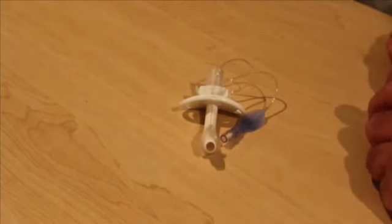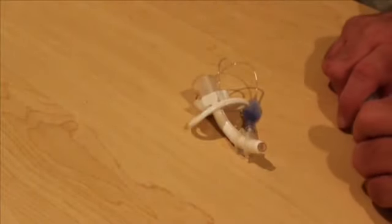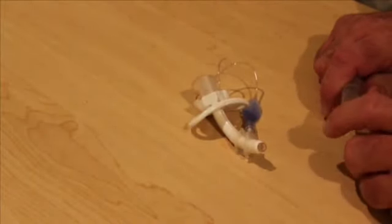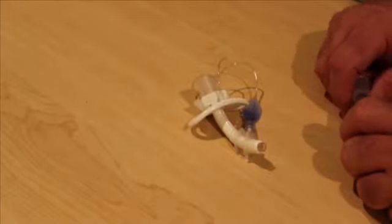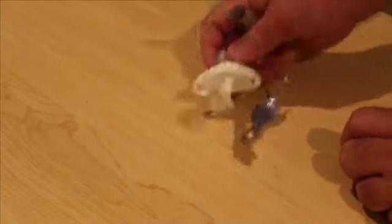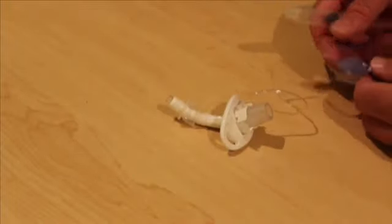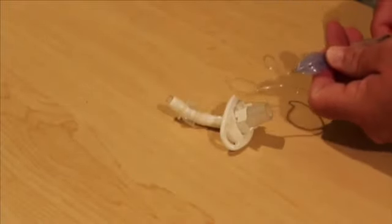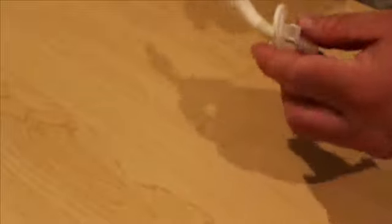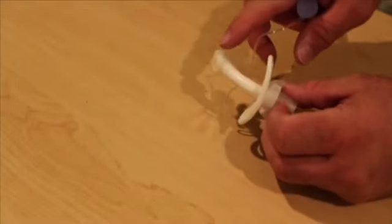In the past, all the trach tube cuffs have been filled with air, which makes sense because it's going into your airway and if it popped you didn't want the water going into your trachea and into your lungs. But with the typical air filled cuff, when you do deflate it all the way, it leaves a lot of extra material around the tube.